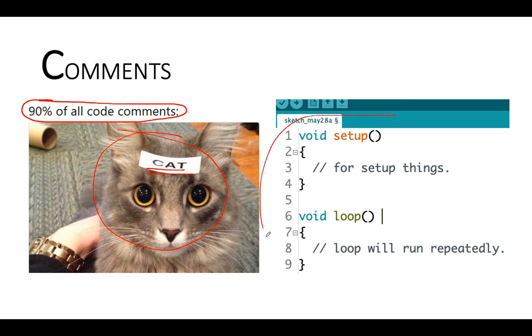It's like this. Since I changed the default comments on void setup and void loop, just imagine that you have a function called void setup and you comment it like for setup things. It doesn't really make any sense because we all know that because that is setup.